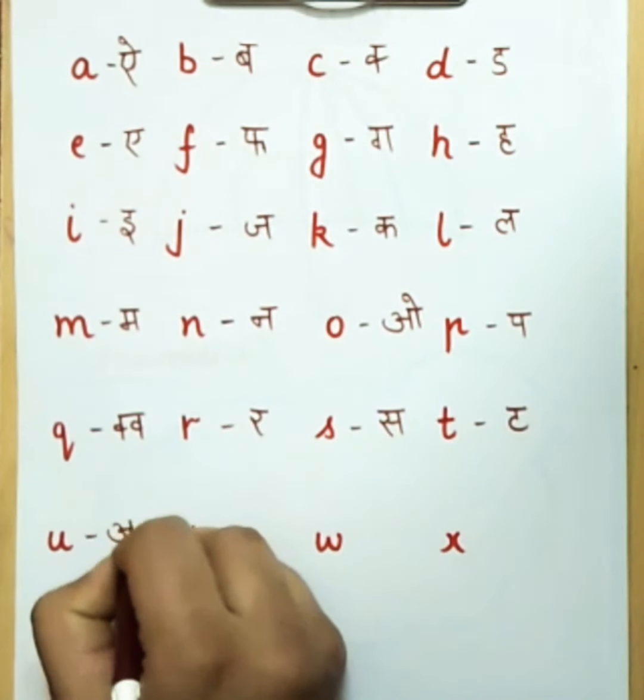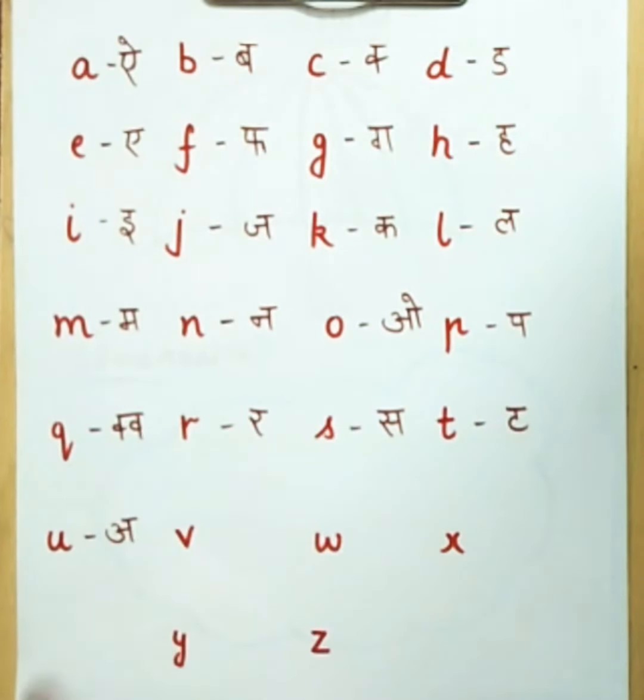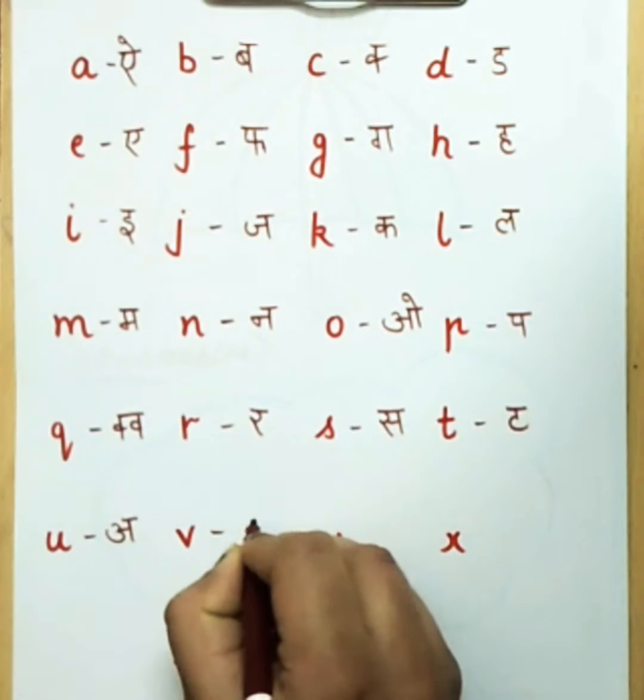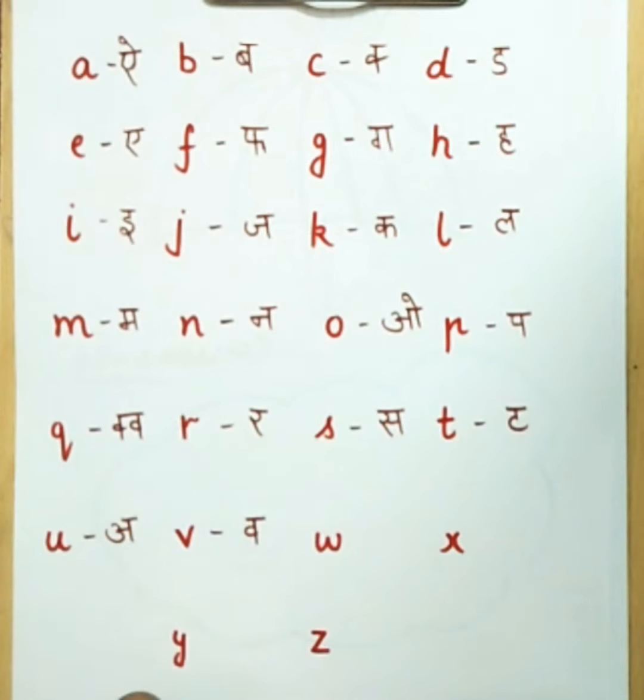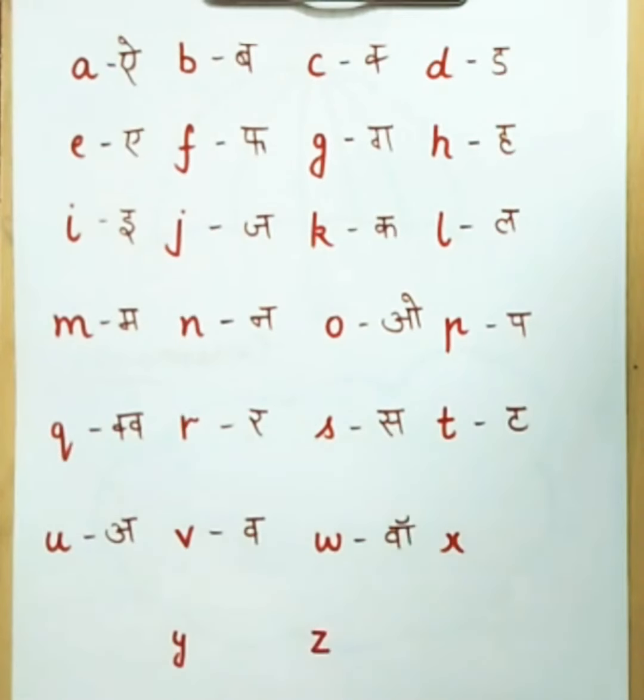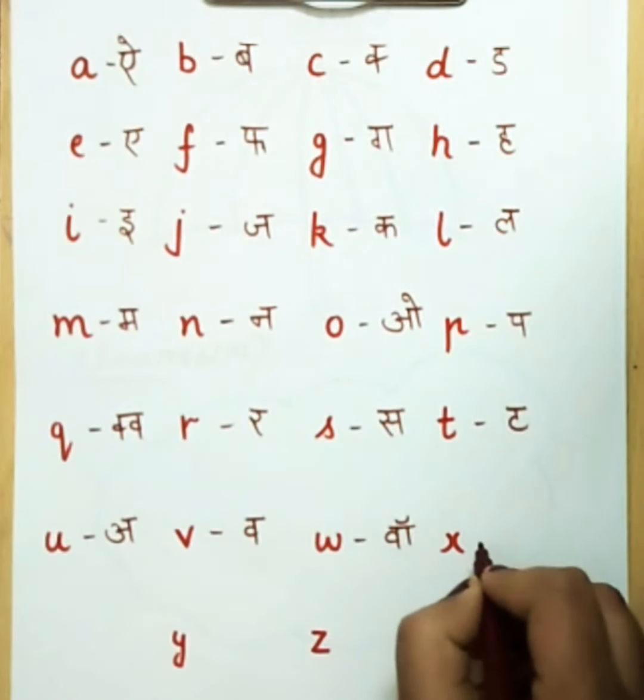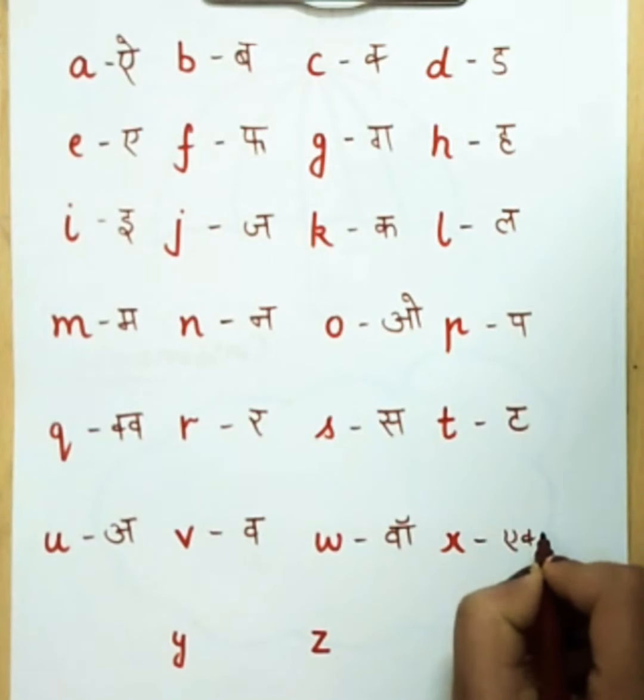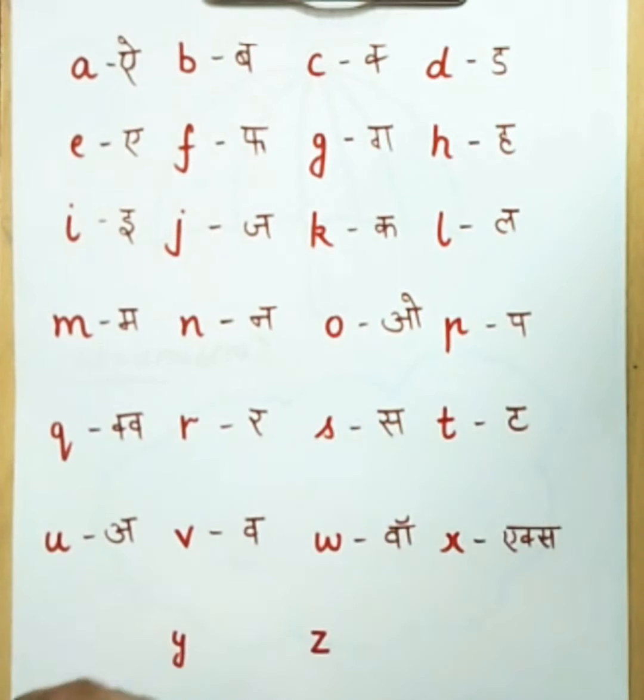U says A as umbrella. V says W as when. W says W as watch. X says X. X mystery.